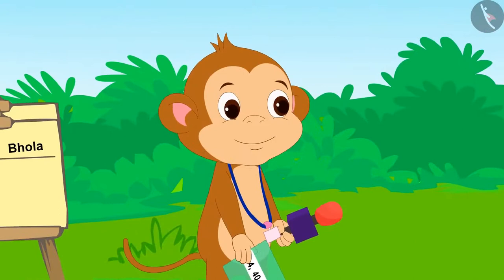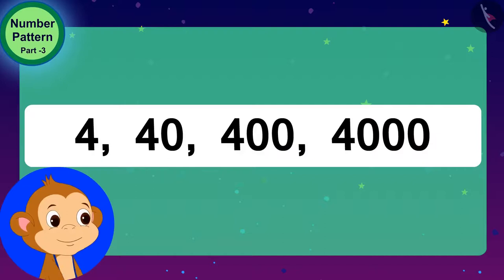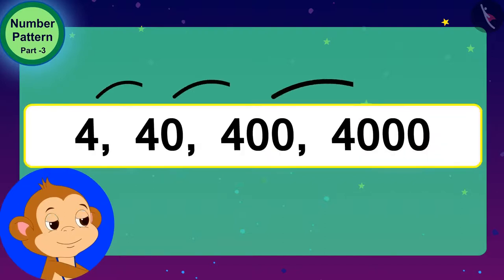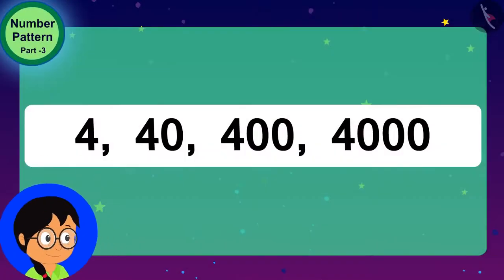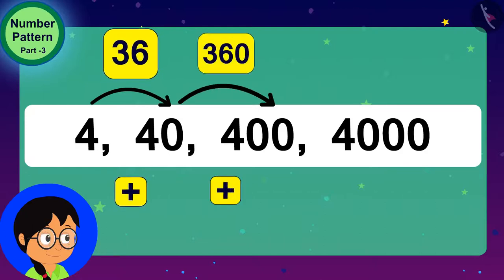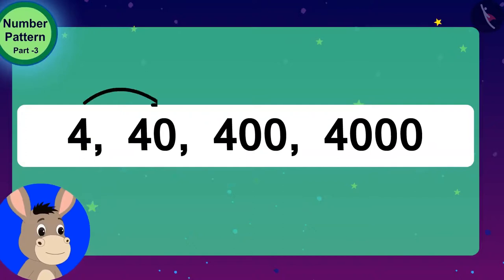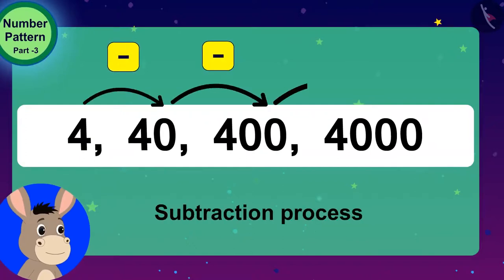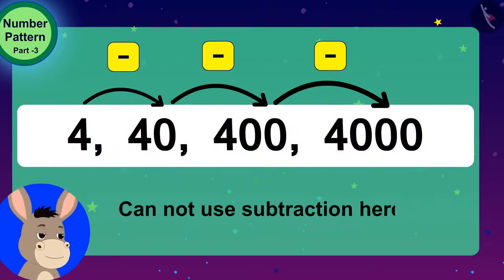Now, Babban showed the contestants the second number pattern. Babban said, you have to find the rule of this number pattern. Whoever finds it first will get 10 points. Meenu tried to use the addition process. In this pattern, no rules can be made using the process of addition because different numbers are being added each time. Bola tried to use the subtraction process. Here the numbers are in increasing order, so I can't use subtraction here.